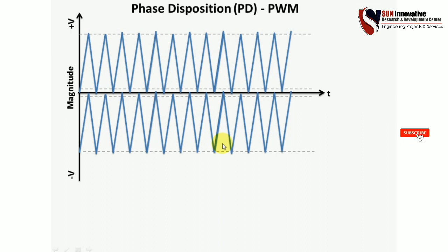Since we are using only 2 carrier signals here, we can generate output pulses for a 3-level inverter — because N minus 1 equals 2 (3 minus 1 = 2), so 2 different carrier frequencies are used for a 3-level inverter.